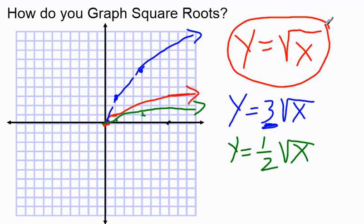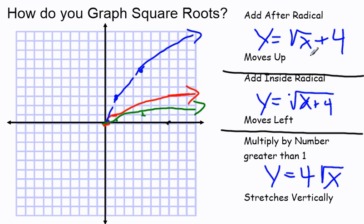So, just to recap. If I add something after the radical, like I take y equals radical x, or square root of x, plus 4, that's going to move everything up. Subtracting after the radical, therefore, would do the opposite. Adding inside the radical would move everything to the left. So, if that x plus 4 were inside, or underneath the square root symbol, that would move everything to the left.